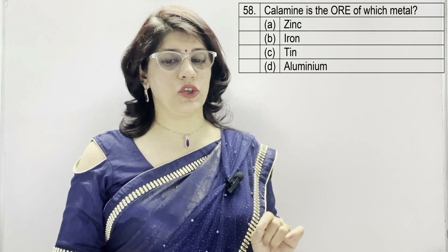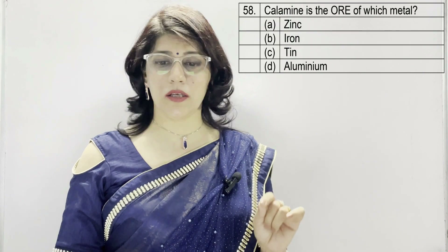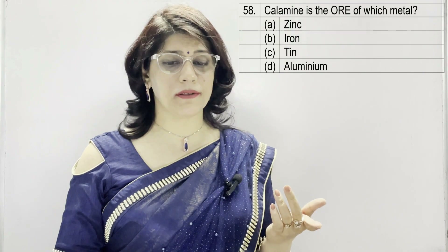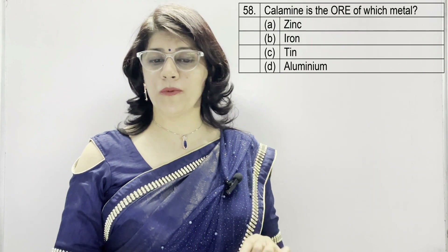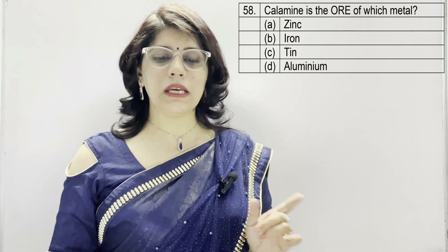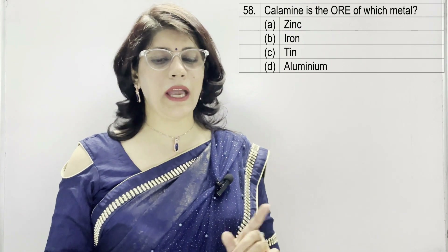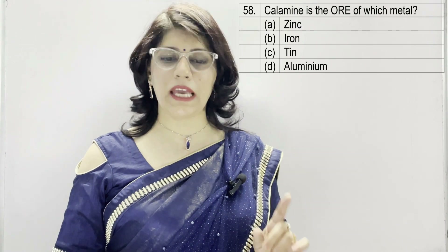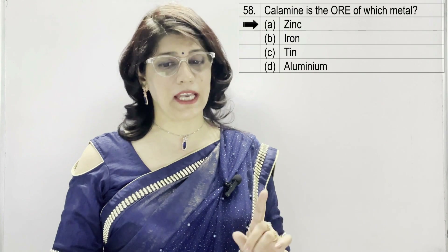In question number 58: calamine is the ore of which metal? A: zinc, B: iron, C: tin, D: aluminium. The correct option is A — zinc.